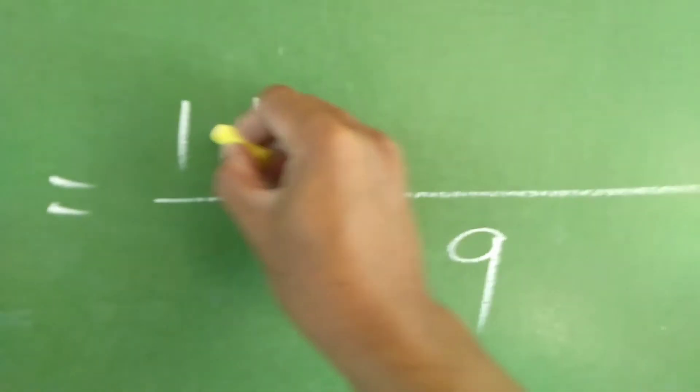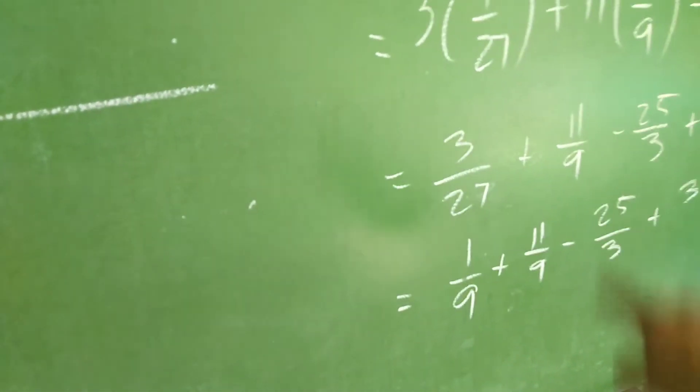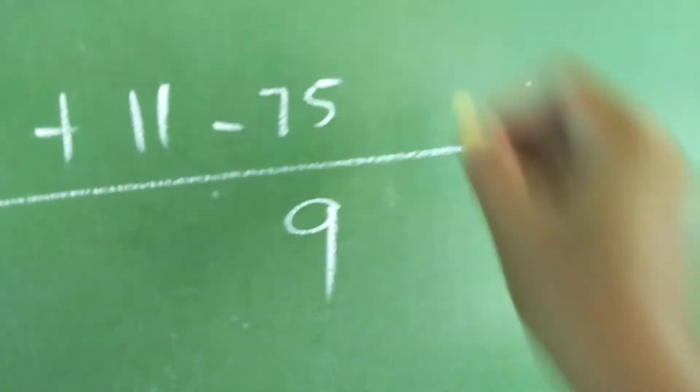LCD na natin siya. Denominator is 9. Para pare-pareos tayo. 1 plus 11. And then, 9 divided by 3 times 25. So, we have negative 75.